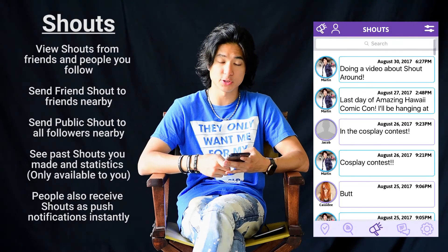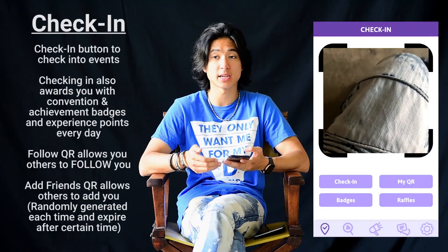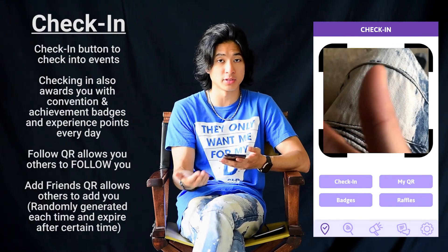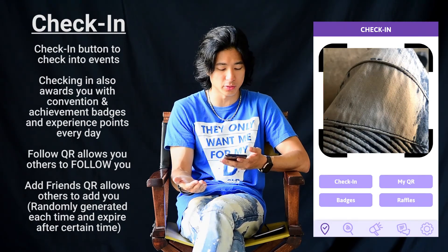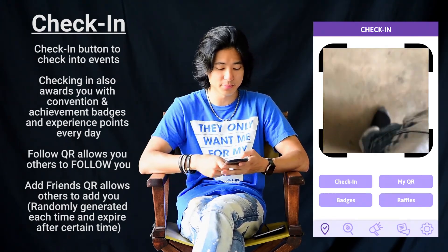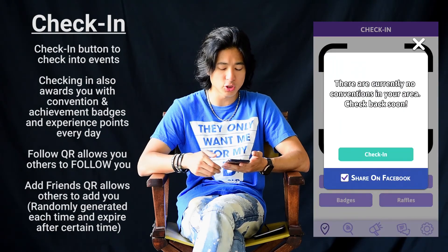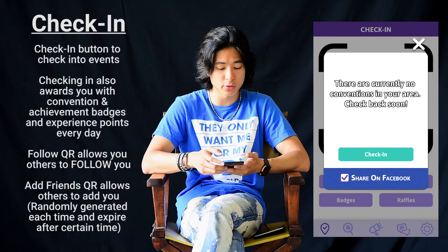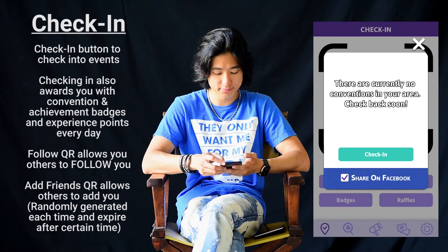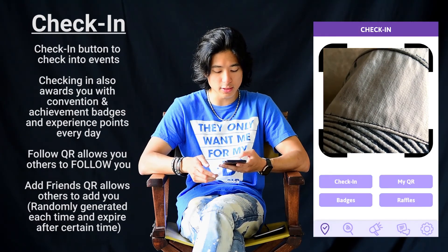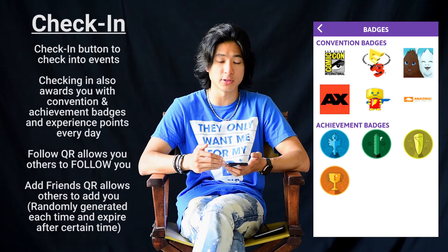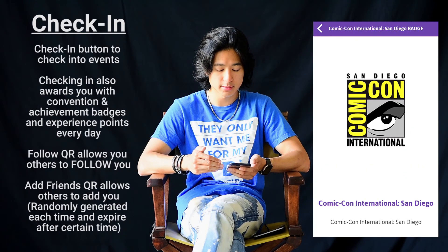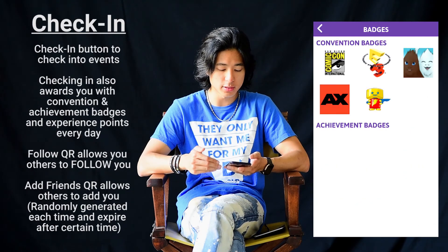Let's go to the check-in section. So this is the check-in section. As you can see, there is a camera here for you to scan a QR code — we'll get to that in a second. You can click on check-in to check in at a convention if there's one currently in your area. You can also click on badges to see all the badges that you have collected for conventions or for achievements.